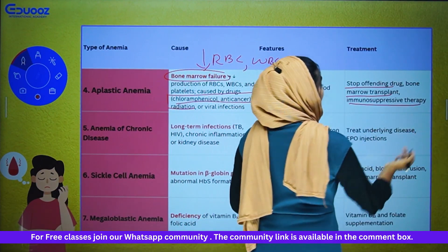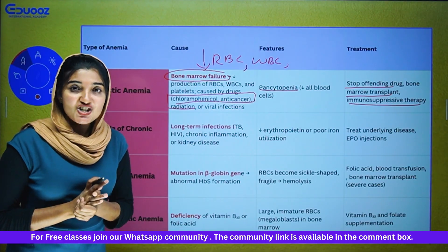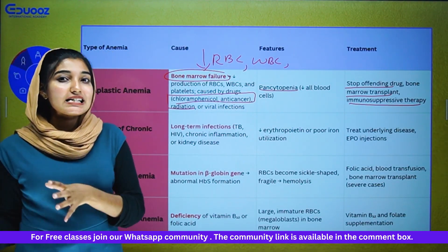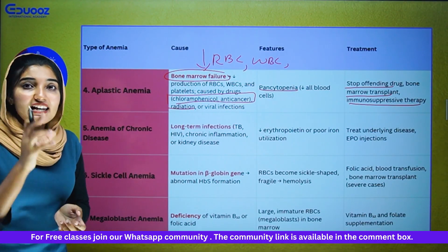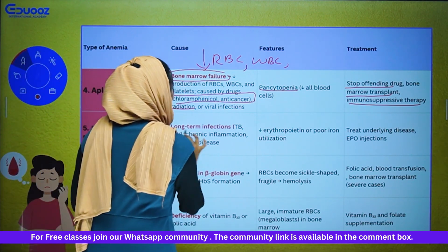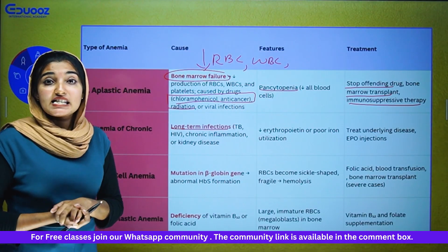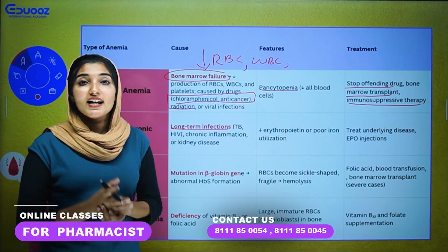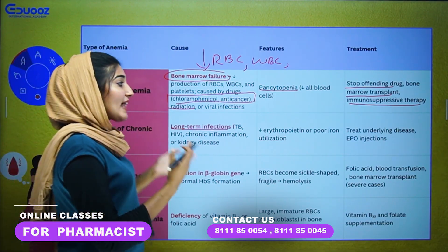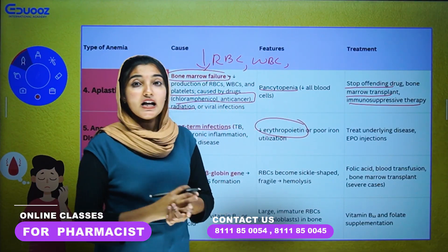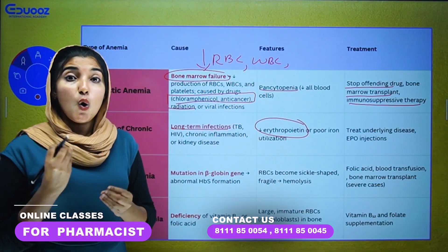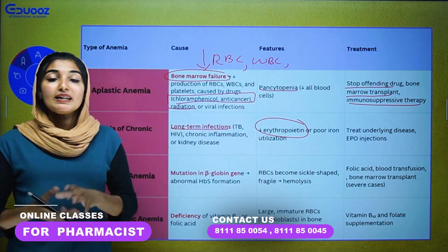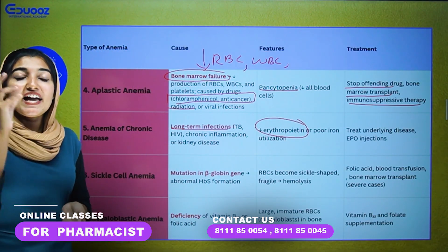Treatment for aplastic anemia is bone marrow transplantation and immunosuppressive therapy. Anemia of chronic disease is caused by long-term infection such as TB, tuberculosis, HIV, kidney disease, and chronic inflammation. The feature involves reduced erythropoietin — a hormone that helps form RBCs — and poor iron utilization.